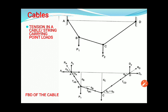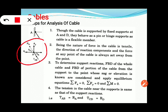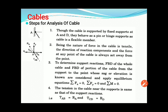You also need to find angles theta_A, theta_B, and theta_C from the geometry of the free body diagram. Steps for analysis of cable: first, since the cable is supported by fixed supports at A and D, it behaves as a pin or hinge support, as the cable is a flexible member. Second, the nature of force in the cable is tensile, and the direction of reaction components acts away from the support point.